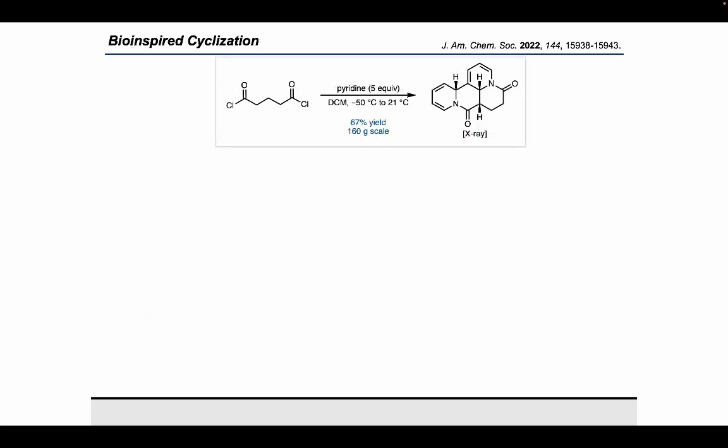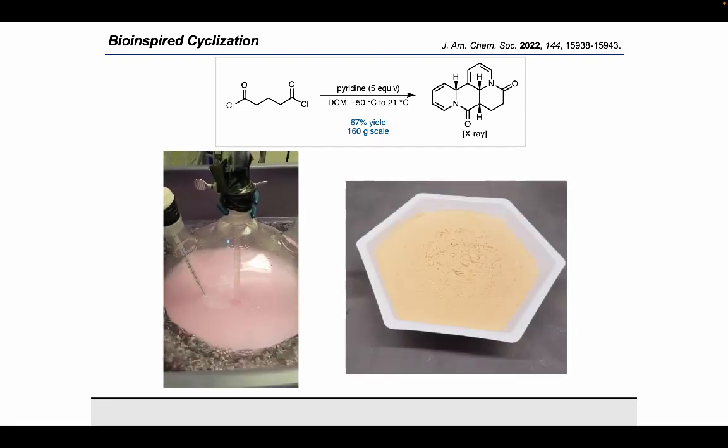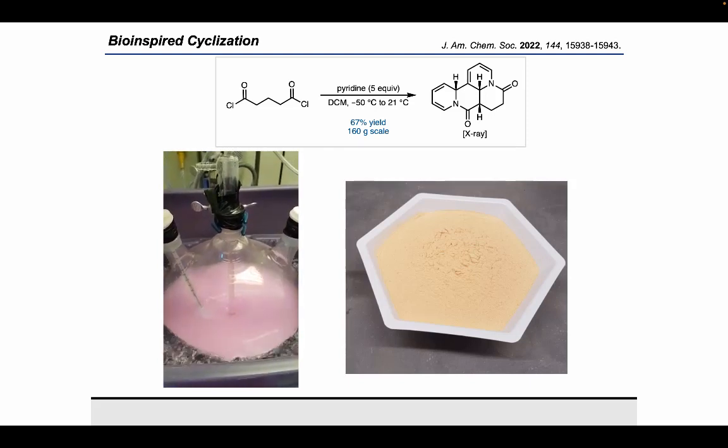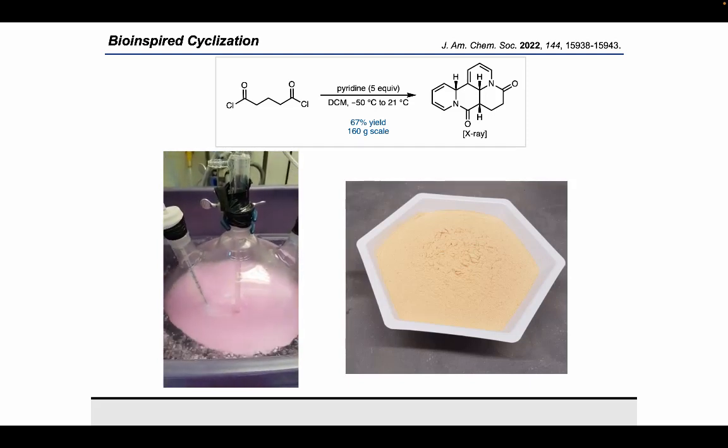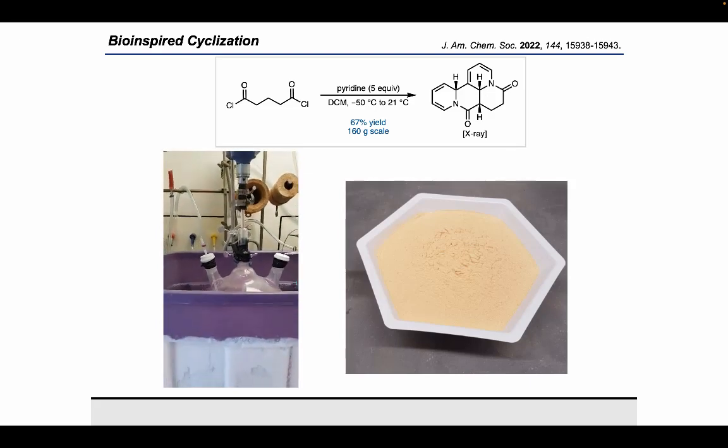The first thing we set out to do for our synthesis was to optimize the reaction between pyridine and gluterochloride. And we quickly found that this reaction was highly robust and very scalable. We could perform the reaction on a one-mol scale to yield over 160 grams of product in a single batch. And what was really nice is the purification of this product was a simple filtration of the crude reaction mixture with no column or no workup necessary.